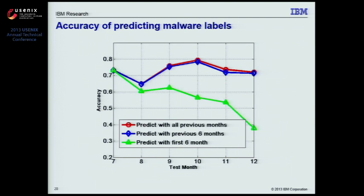Question: How do you know the ground truth about the family label? To train your system over time, someone needs to tell you whether the label was correctly assigned or not. Response: We have to rely on either security experts or AV company labels. I agree — I actually found a lot of problems with the labels. Even within the same family, there can be large variation among variants that are quite different but clustered into the same family for some reason.